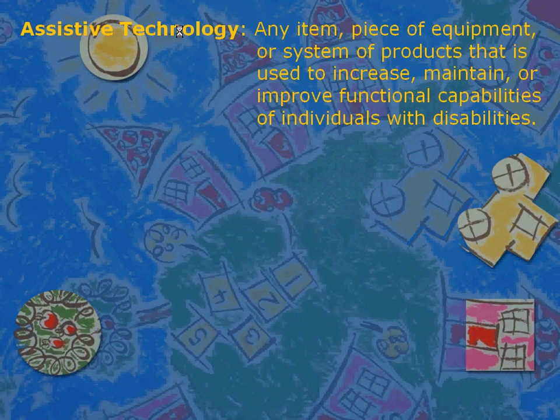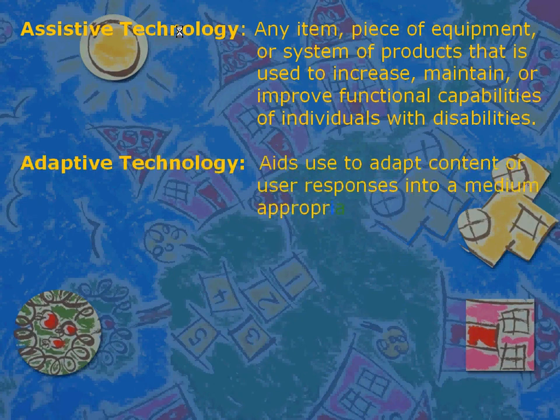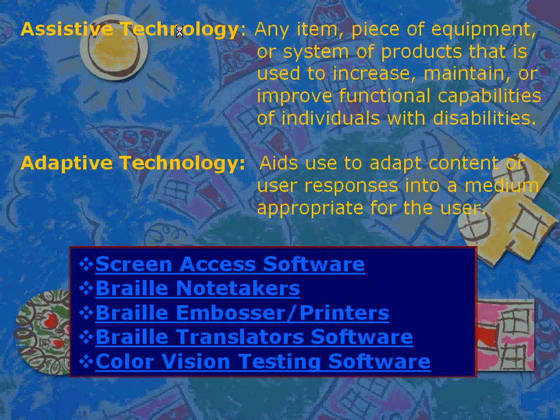Adaptive technologies are the aids used to adapt content or user responses into a medium appropriate for the user. Among the many types of assistive and adaptive technologies are screen access software, braille note takers, braille embossers or printers, braille translator software, and color vision testing software.